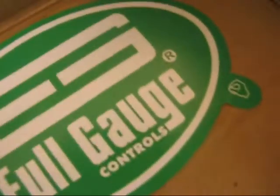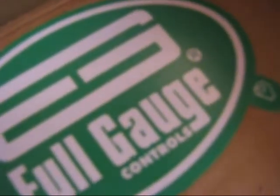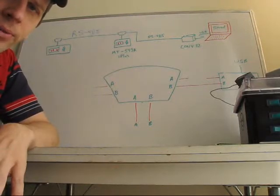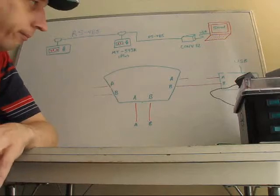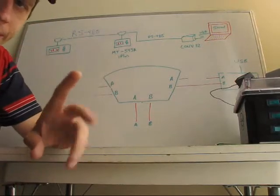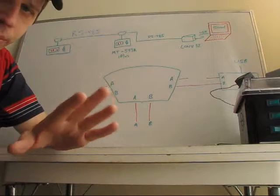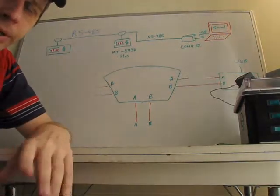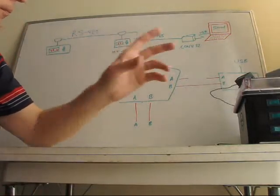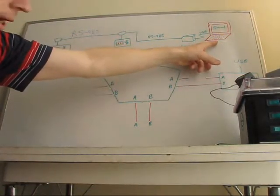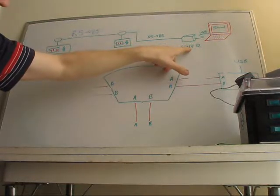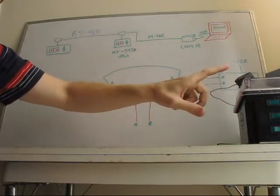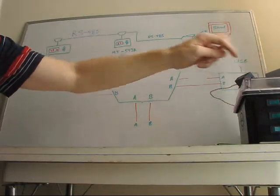Okay, so this is a basic topology map of what your network would look like. The network, in this case, it's RS-485, which is a manufacturing automation standard. We have the computer on one side, and we have this new equipment, the Conv32. Between those two is the USB cable that you received with the Conv32.